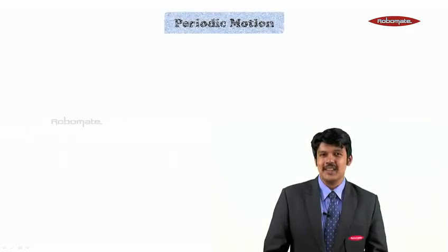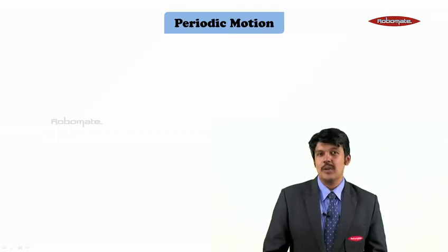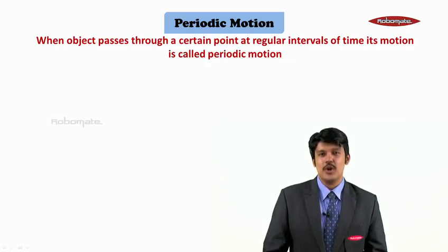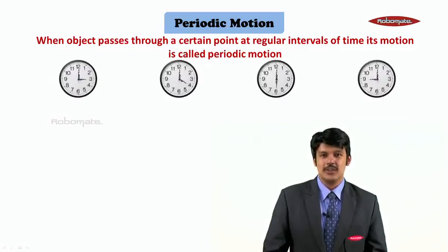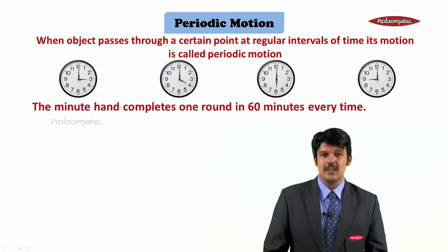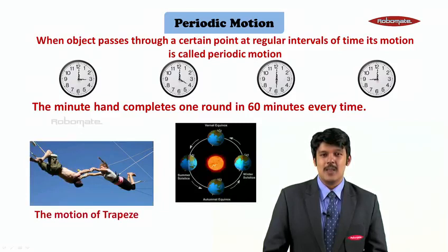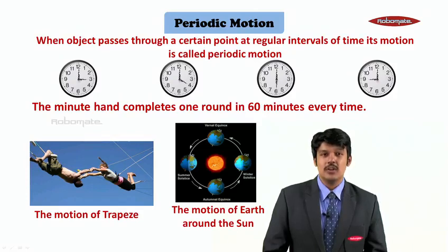Let us now understand the next type of motion — periodic motion. An object that passes through a certain point at regular intervals of time is said to be in periodic motion. The best example is the motion of the hands of a clock: the minute hand completes one round in 60 minutes every time, so we say the minute hand is performing periodic motion. Similarly, the motion of a trapeze and the earth moving around the sun are also examples of periodic motion.